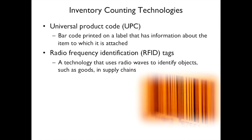Inventory counting technologies include the universal product code — the barcode you see on anything you buy. It's a number attached to a product. When someone wants to sell something, they get a number assigned, that number goes into the database, and the system knows that product is that number.